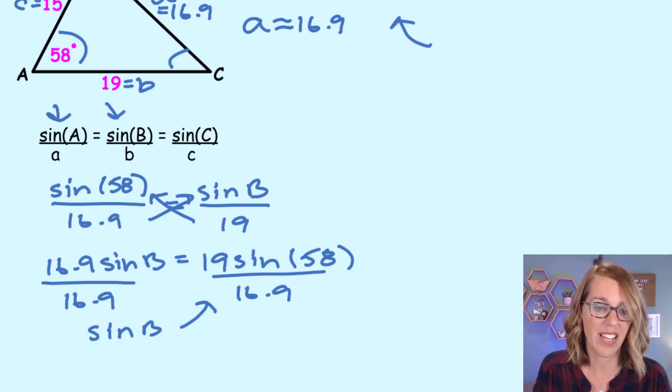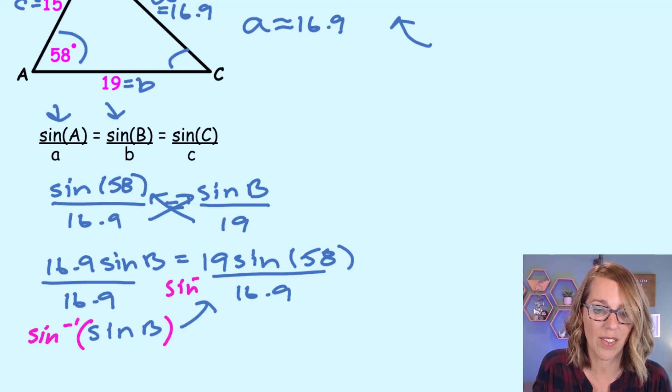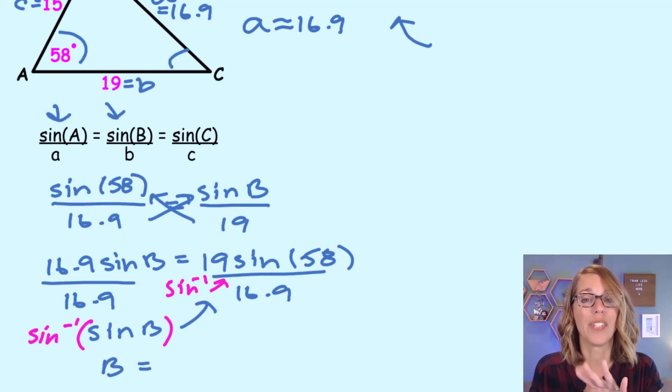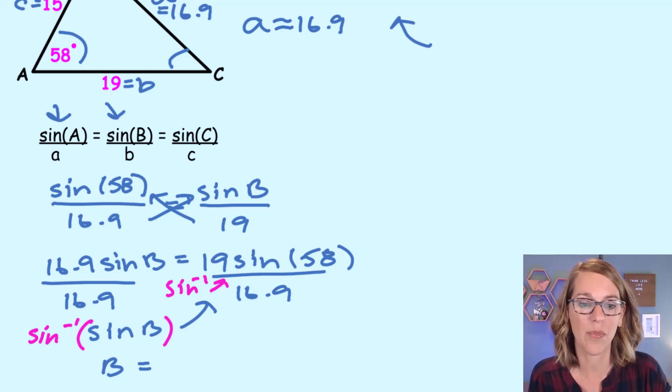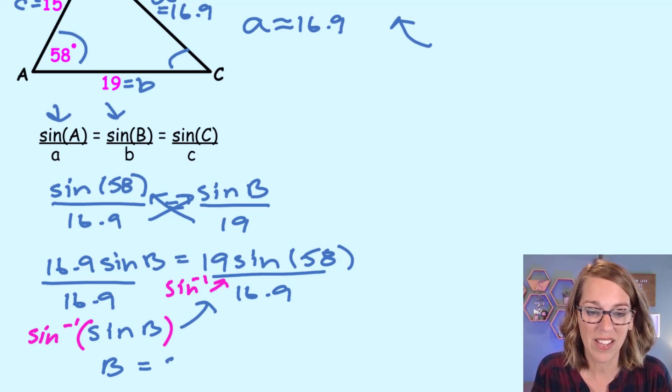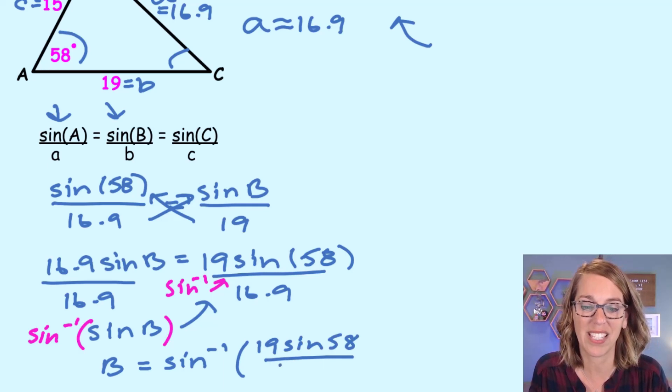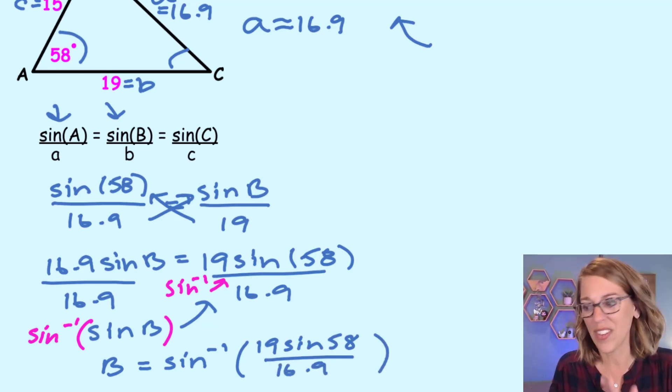So I'm going to apply the sine inverse to this side and to all of this. So to all of this. Okay, so what does that leave me with? This leaves me with angle B. Now sine inverse will only give me an acute angle between negative 90 degrees and positive 90 degrees. And that's okay. That's going to work out here. So I get angle B is equal to sine inverse of all of this stuff. 19 sine 58, all divided by 16.9. Okay, now that I've got that down.